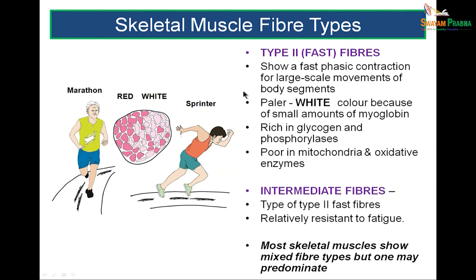On the other hand, type 2 fast twitch fibers are seen mostly in sprinter muscles. They are paler and white because they have small amounts of myoglobin. There is also an intermediate type of fiber — type 2 fast fiber but not so fatigable. Normally, muscles are a combination of red and white fibers, some having more red and some having more white.